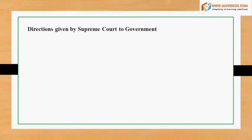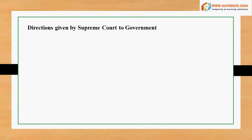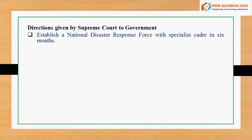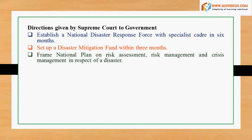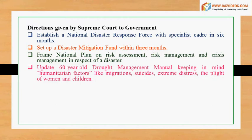Directions given by the Supreme Court to the government: Establish a National Disaster Response Force with a specialist cadre within six months. Set up a disaster mitigation fund within three months. Frame a National Plan on Risk Assessment, Risk Management, and Crisis Management in respect of a disaster. Update the 60-year-old Drought Management Manual, keeping in mind humanitarian factors like migrations, suicides, extreme distress, and the plight of women and children.